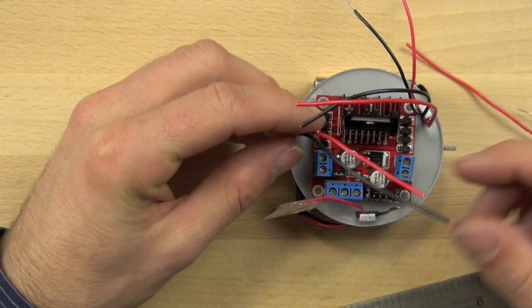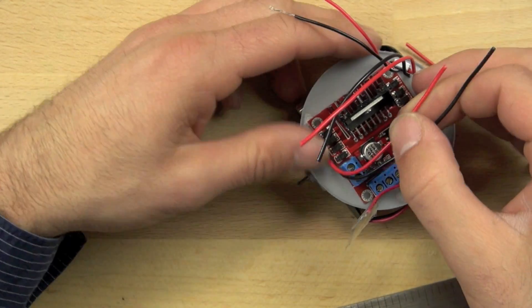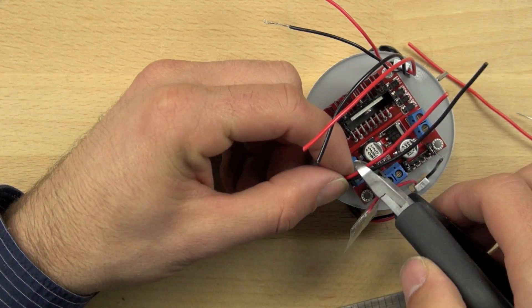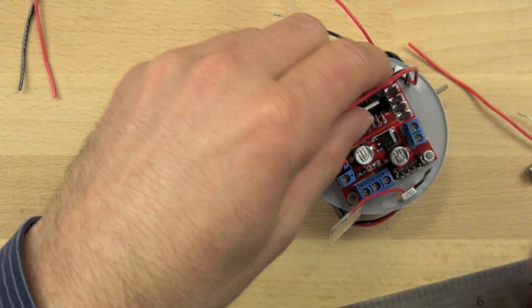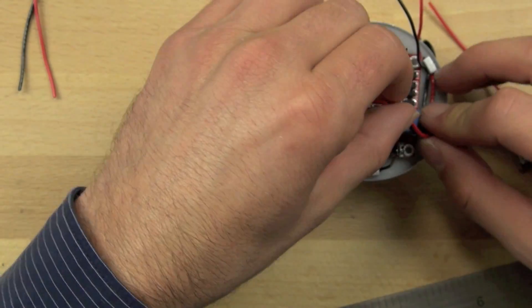So now what we're going to do is we're going to trim down our motor wires. These are the two motor wires here. We're going to connect those to one side of our L298 and then we'll connect the other two motor wires to the other side of the L298 motor controller.